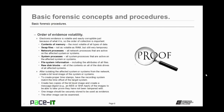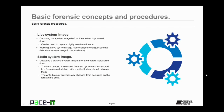After isolating the affected system from the network, a bit-level image of the system needs to be created. When creating the bit-level image, it is necessary to create the proper timestamps — have the recording system match the time offset of the target system. It is necessary to create two copies of the bit-level image and to create a message digest of those images, to prove later that the images have not been tampered with. One image should be securely stored and kept as evidence; the other image can be examined in detail. There are two types of system image: live and static. A live system image captures the system image before the system is powered down and can be used to capture highly volatile evidence. However, a live system image may change the target system's data structure, resulting in a change in the evidence.